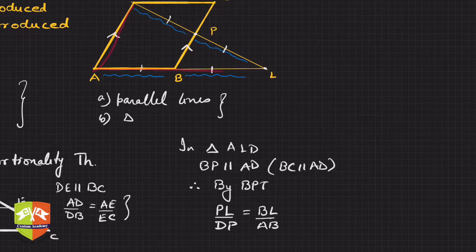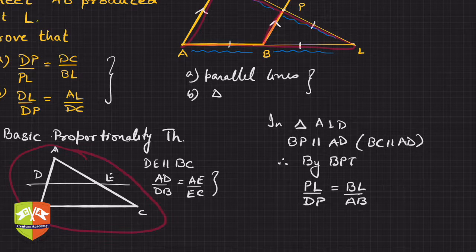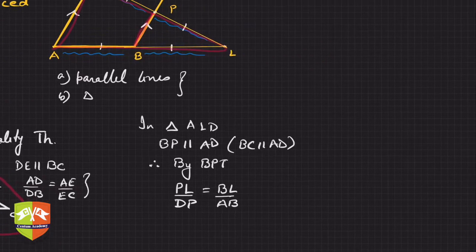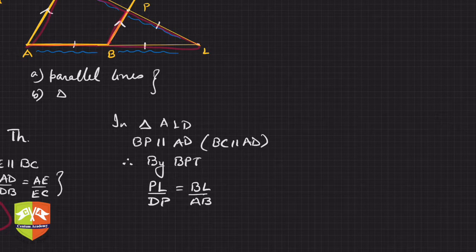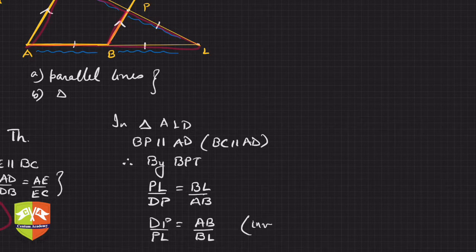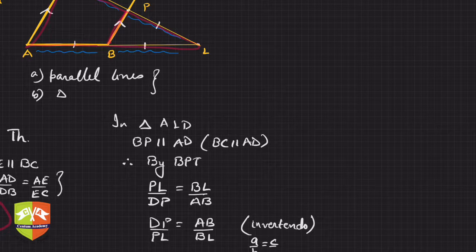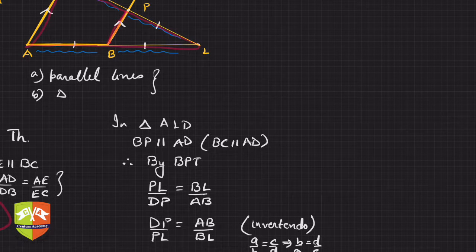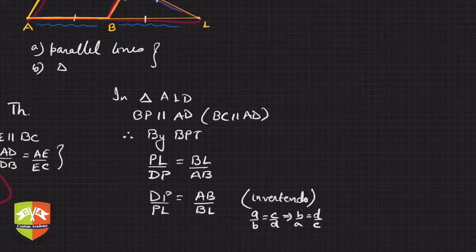If you invert both sides — take the reciprocal — you get DP by PL is equal to AB by BL. This process is called invertendo: if a/b = c/d, then b/a = d/c. So DP upon PL equals AB upon BL.